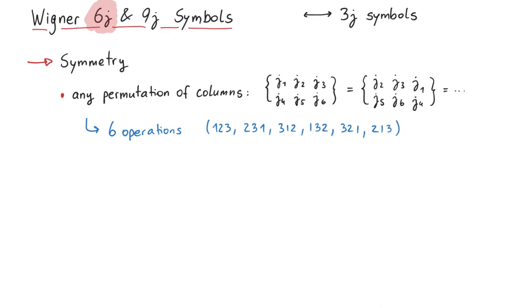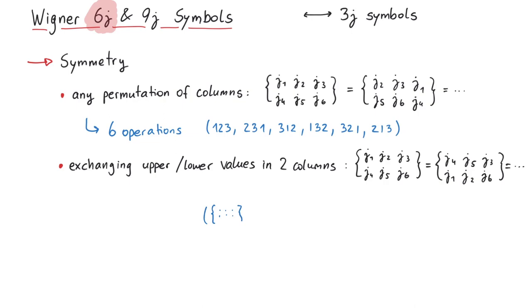Also, simultaneously exchanging the upper and lower values in two columns also does not change anything. This means we can change nothing, or leave the first, second, or third column as it is. Therefore, this corresponds to four operations. So in total, the Wigner 6j symbol has 24 symmetry operations.